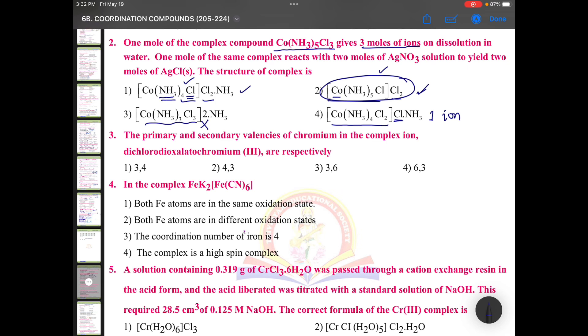Here cobalt is with five ammonias and one chloride. Cobalt coordination number is six, so this is your right answer. If it is the right one, then cobalt coordination number will become five. Cobalt coordination number is six only.